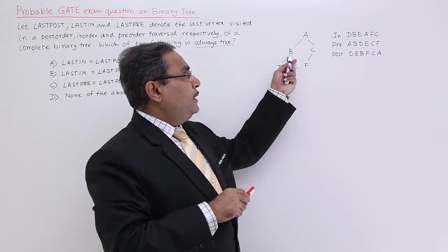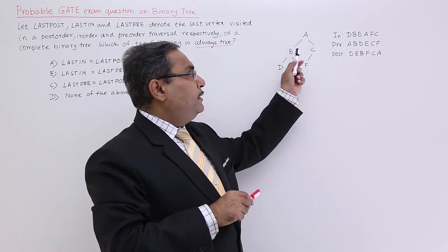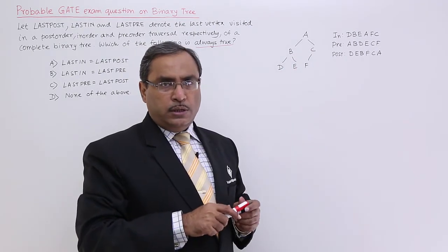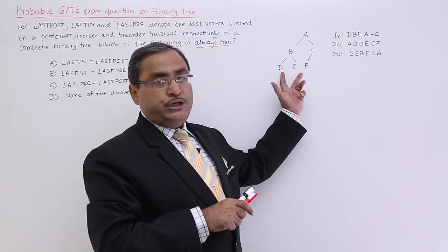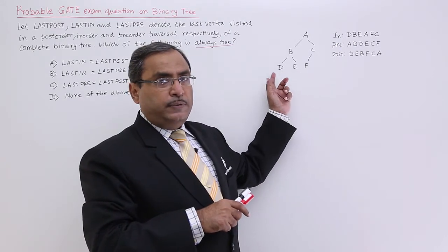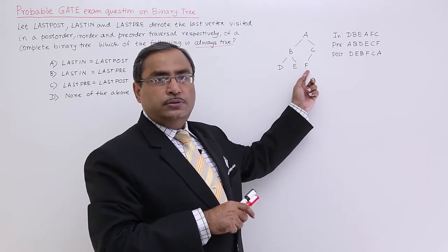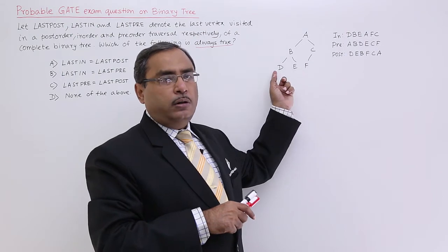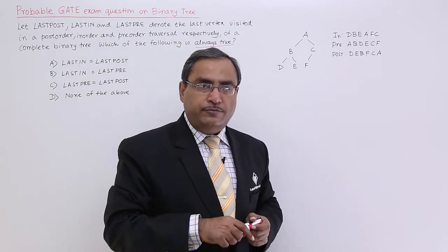Now let me take one complete binary tree. I have taken one complete binary tree here. We know that each and every level should have the maximum number of nodes. But the last level can have partial number of nodes. But from the extreme left child to the last node, there should not be any null. All the nodes must be present. So, it is a complete binary tree.